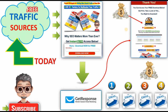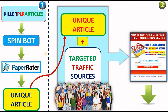By doing that you will be contributing positively to those communities and driving free targeted traffic to your affiliate links in the process. We also saw the method to get unique content fast using three websites: Killer PLR articles, Spin Bot, and Paper Rater. If you did not watch the first video, please check the links in the description. Today we're going to dive deeper and see how we use that unique article on free traffic sources.